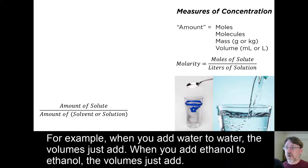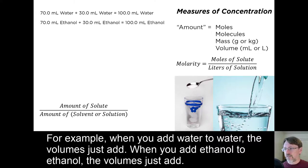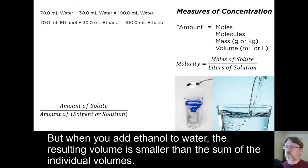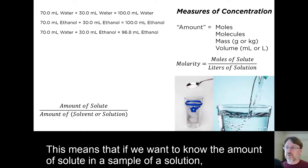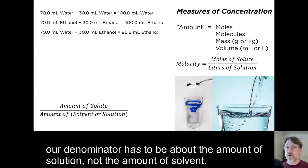For example, when you add water to water, the volumes just add. When you add ethanol to ethanol, the volumes just add. But when you add ethanol to water, the resulting volume is smaller than the sum of the individual volumes. This means that if we want to know the amount of solute in a sample of a solution, our denominator has to be the amount of solution, not the amount of solvent.